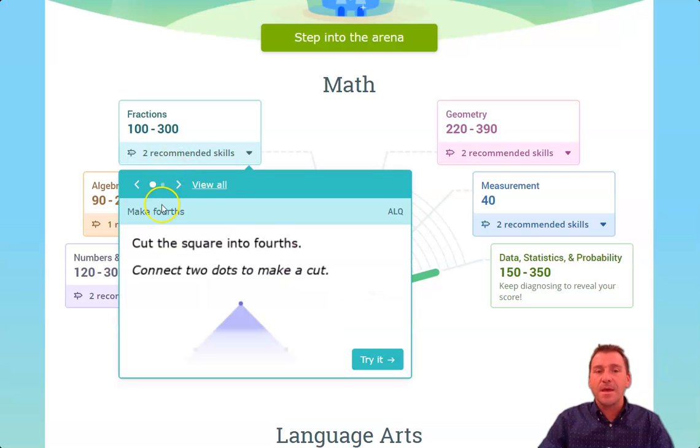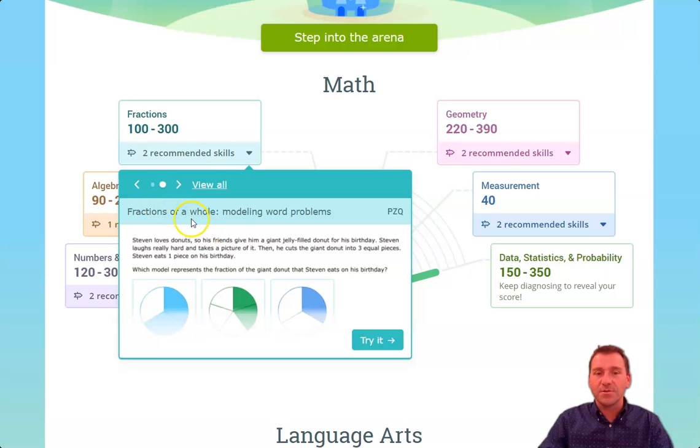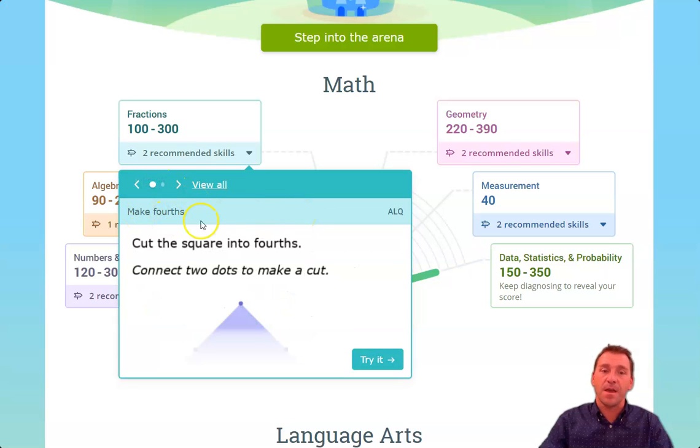They click on that, and it gives you the option here to either use the arrows to scroll left and right, or you can click on each of the little buttons, the little dots, to get it to the left or right. It tells you the exact skill, so fractions of a whole modeling with word problems is one of these skills for fractions, and then the other one is make fourths.